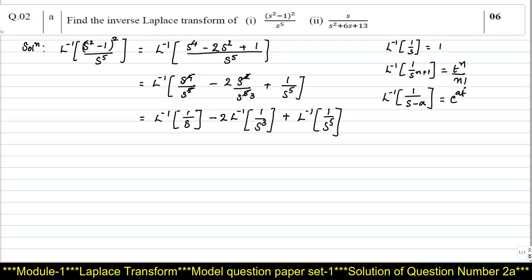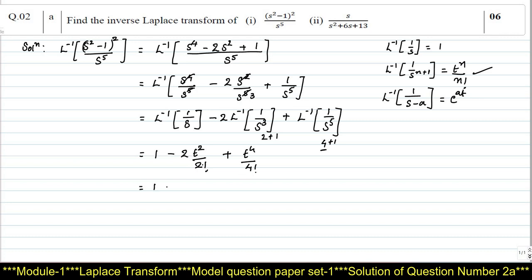For all these terms, I am going to use the definition: L inverse of 1/s^(n+1) = t^n / n!. For L inverse of 1/s, the result is 1. For L inverse of 1/s³, since 3 = 2 + 1, n = 2, giving t²/2!. For L inverse of 1/s⁵, since 5 = 4 + 1, n = 4, giving t⁴/4!. Finally, the answer is 1 - t² + t⁴/24.